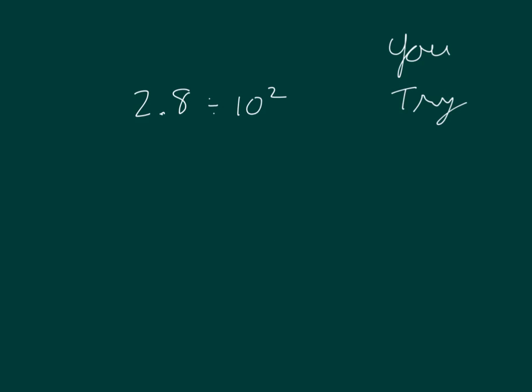You try: 2 and 8 tenths divided by 10 squared. What did you get? Well, that would be 2.8 divided by 100, meaning the ones would be over into the hundredths place, and the 8 tenths into the thousandths place.